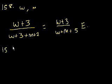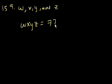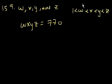Problem 159. If the product of the integers w, x, y, and z is 770, and if 1 is less than w, which is less than x, which is less than y, which is less than z, what is the value of w plus z? They're telling us these are integers. We have four integers, and they're all greater than 1.